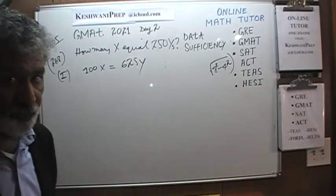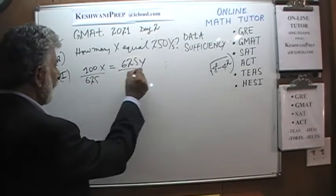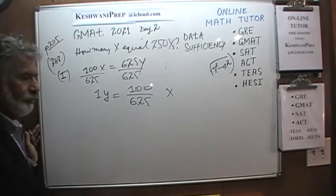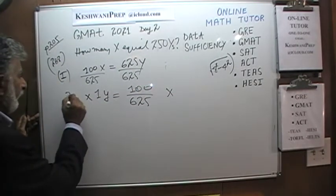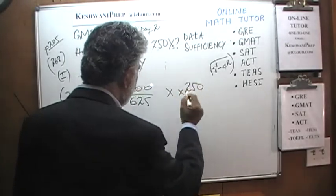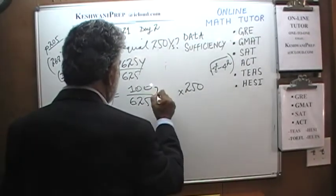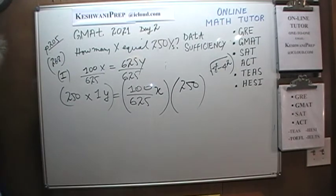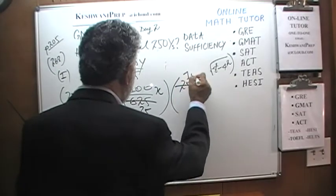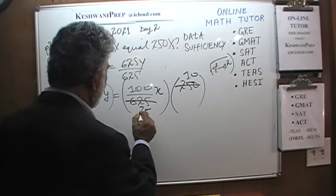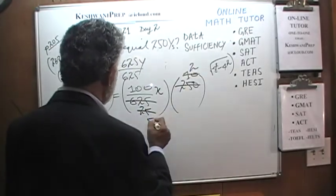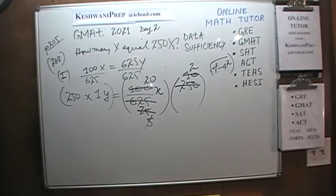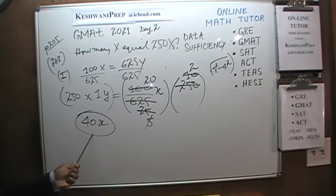Simplifying: divide top and bottom by 25 to get 10, then divide by 5 to get 2 over 25, then divide by 5 again — 250Y equals 40X. But this calculation was a waste of time; we don't have to do it in the exam. Also, you should know that 625 is 25 squared — if you are sitting for the GMAT, you must know basic squares by heart.